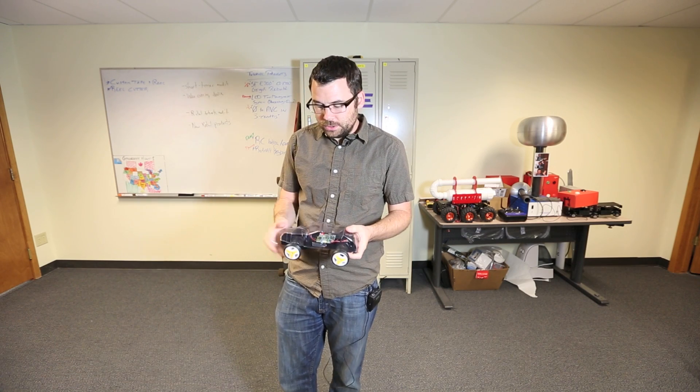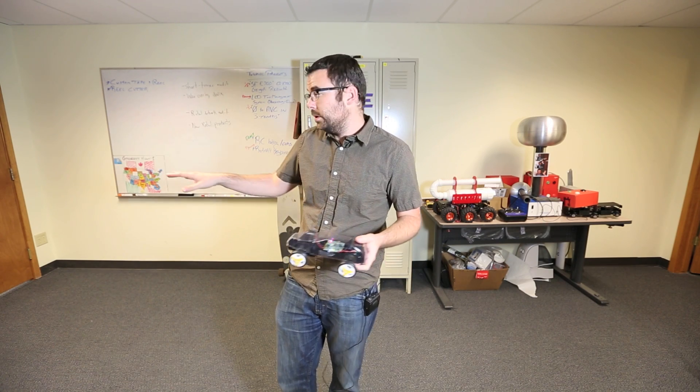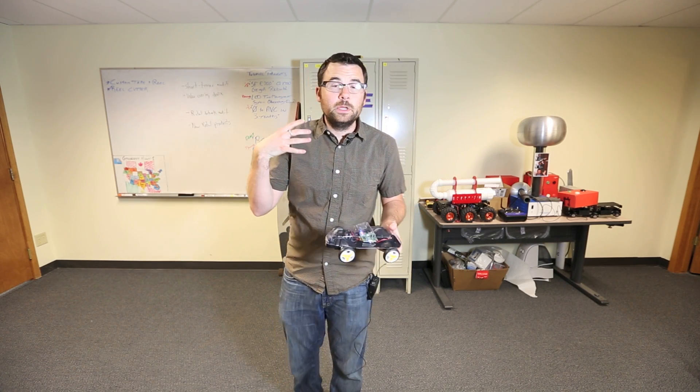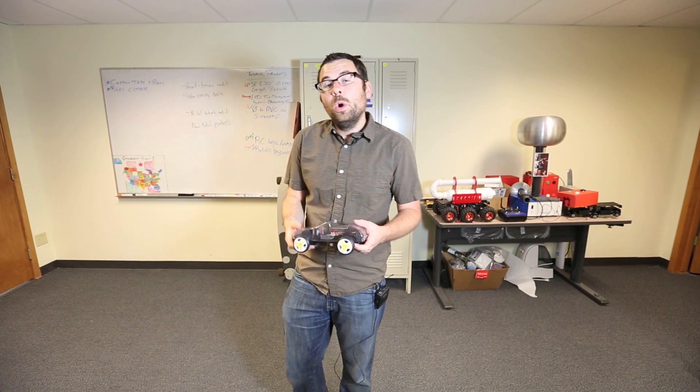Now, let's say you want to do your own custom control, and you don't want to use the Android app. You want to do something just directly with Bluetooth. What we've done is we've taken a 9DOF sensor stick, and we've combined it with an Arduino to create our own controller.